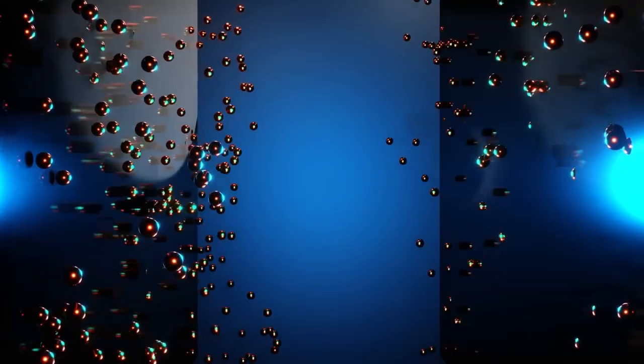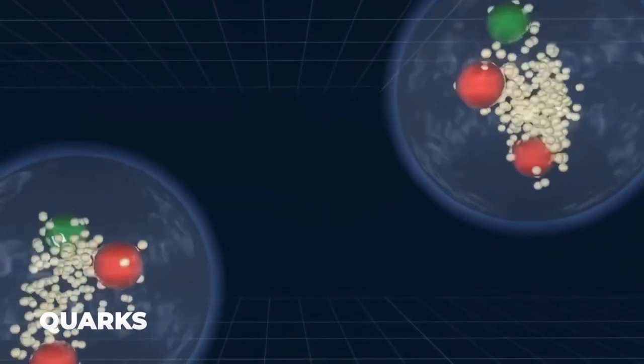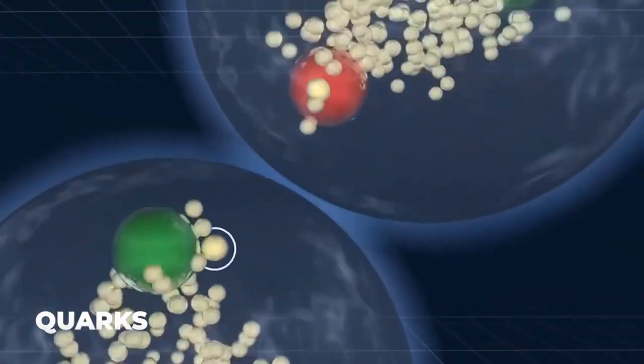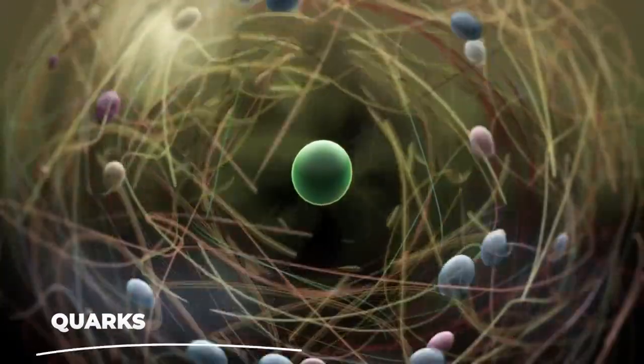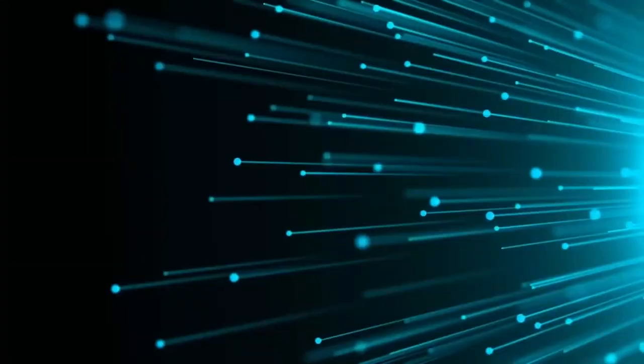Each of the protons and neutrons that make up the nucleus is composed of three tiny particles known as quarks. Quarks come in six various varieties: top, bottom, strange, charm, up, and down.